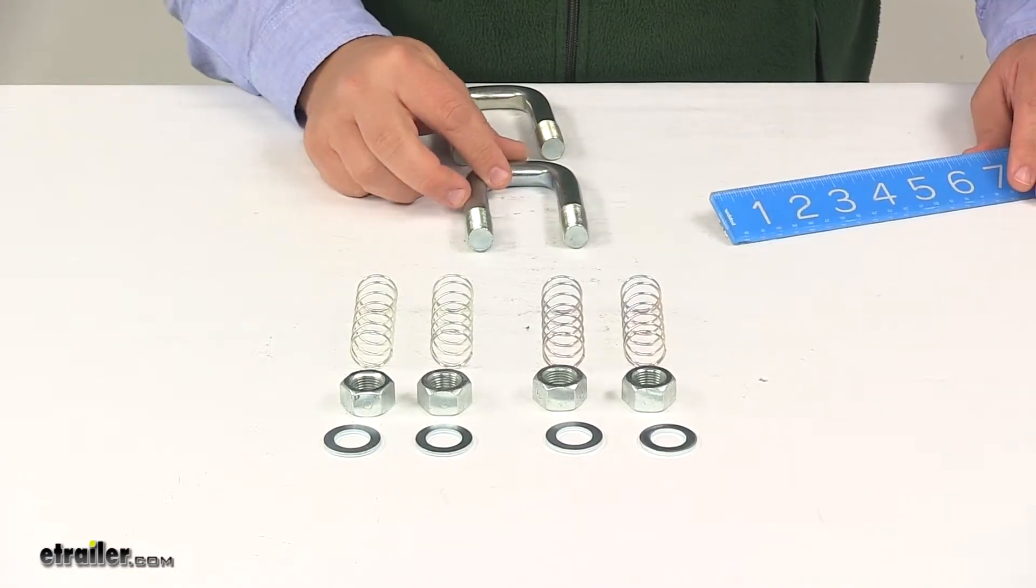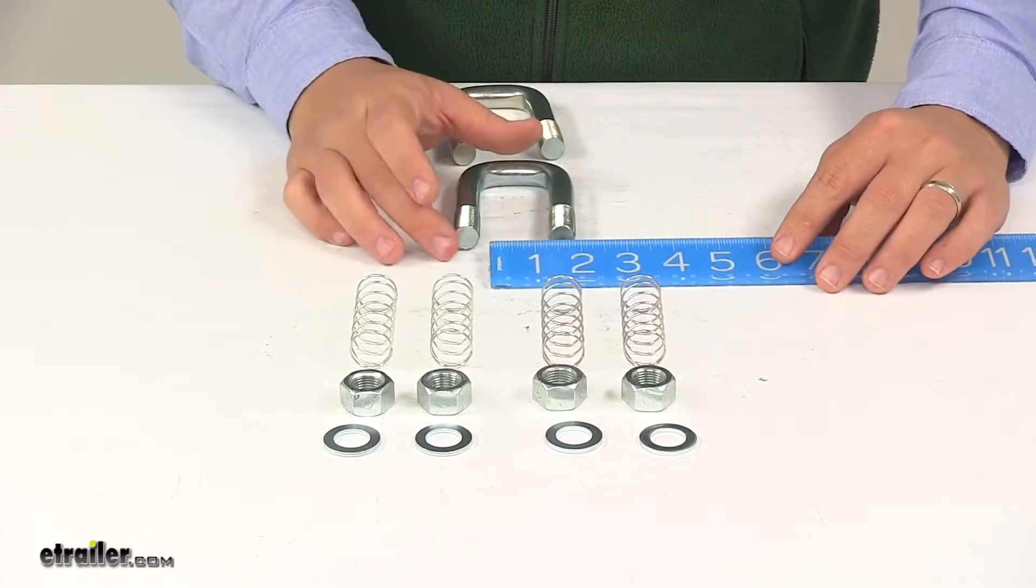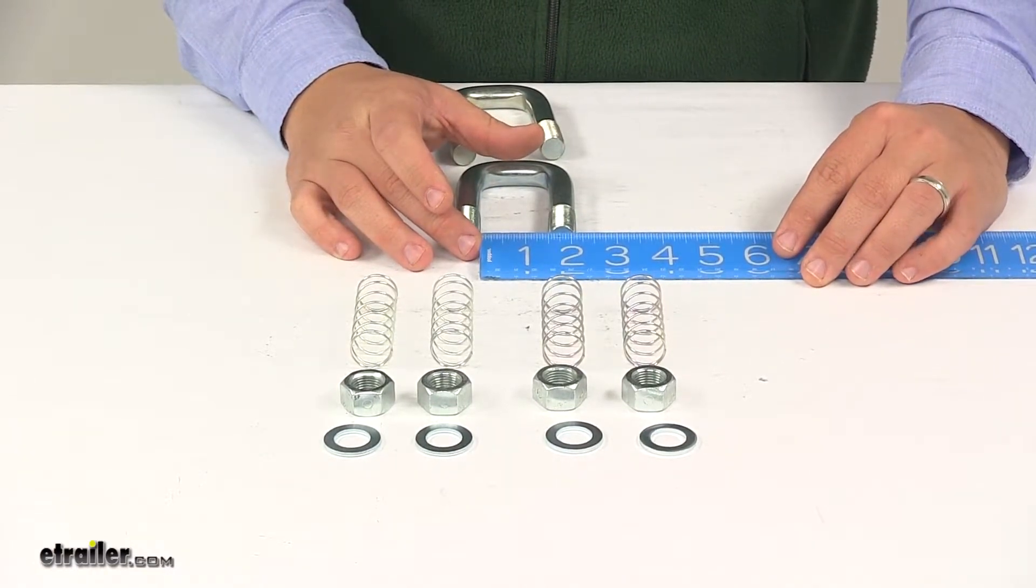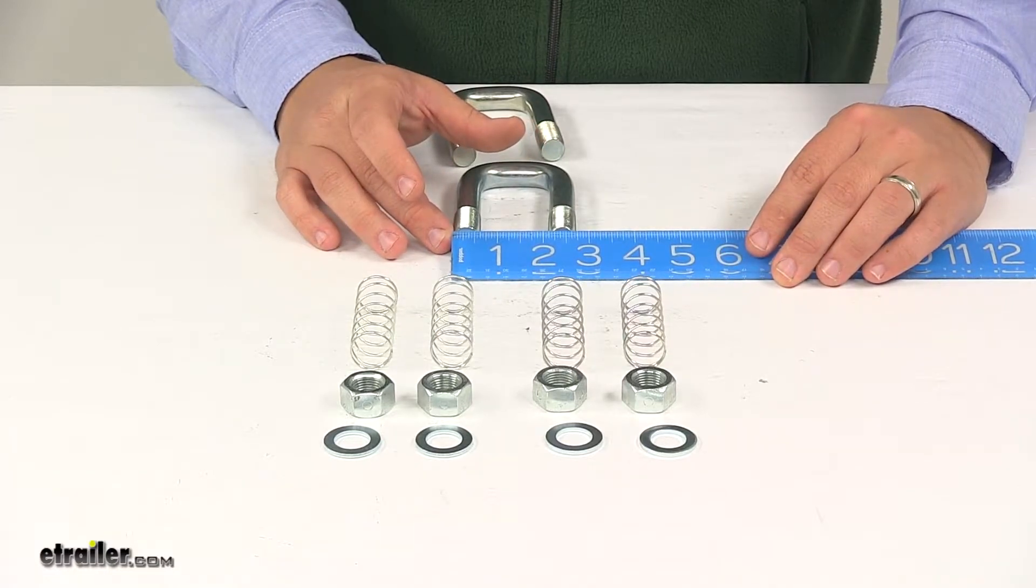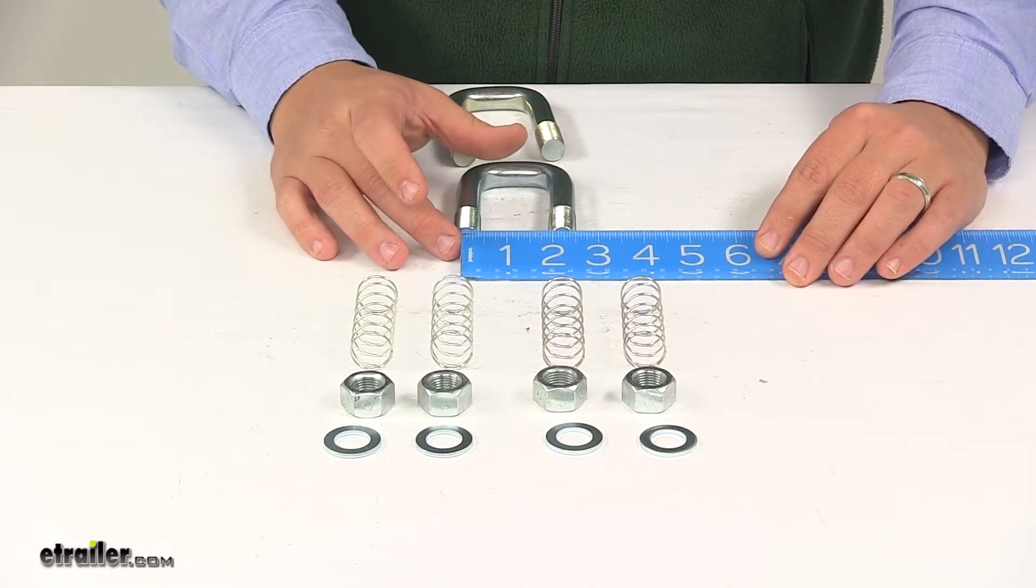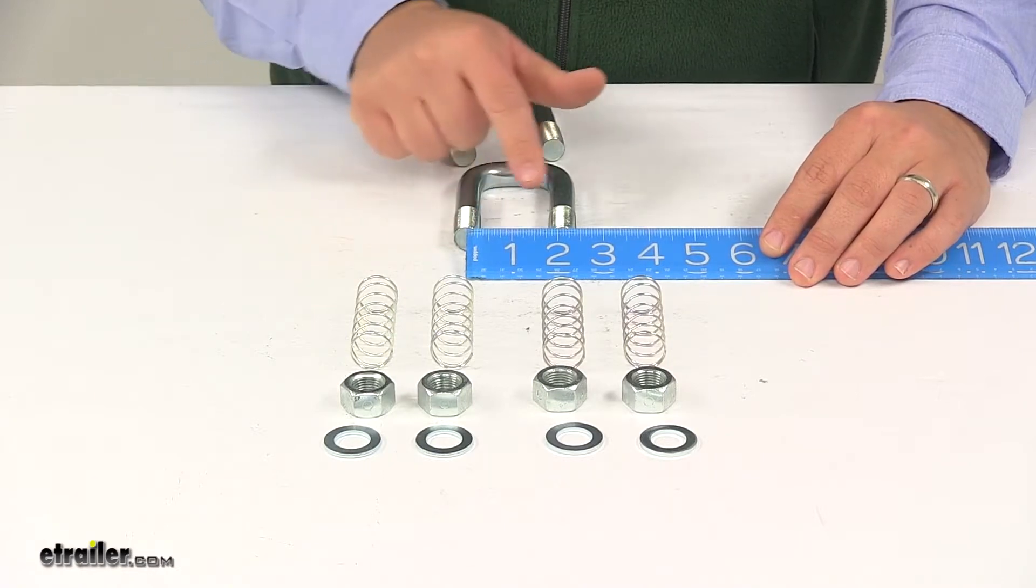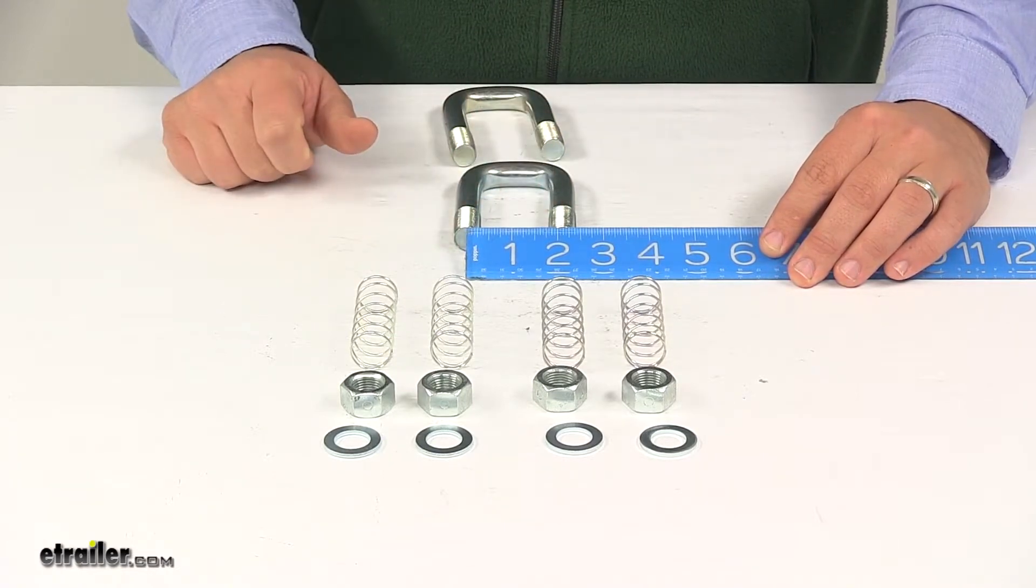The inside width, that's the opening that we have, measures an inch and a half. Outer edge to outer edge is about two and eleven-sixteenths of an inch. From the center of one post to the center of the other is two and one-eighth.